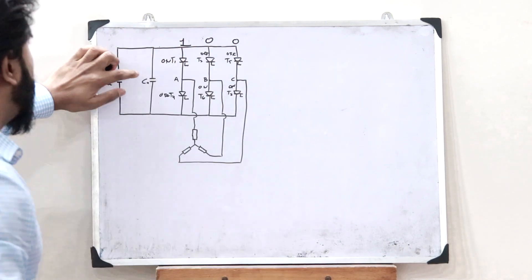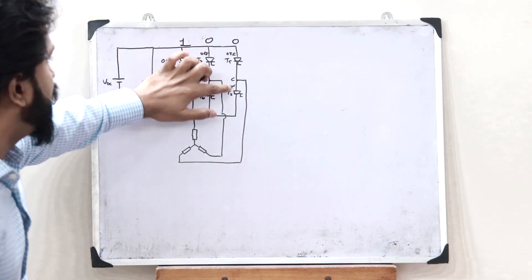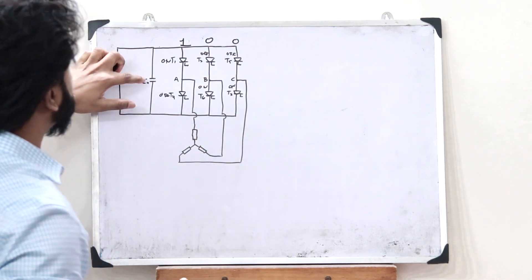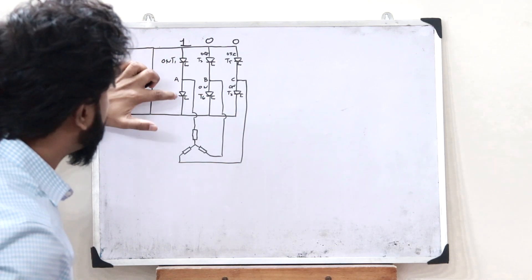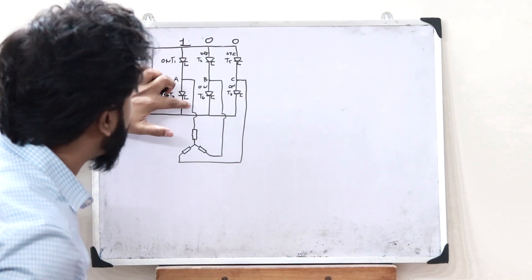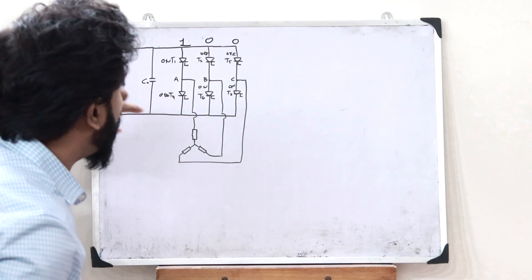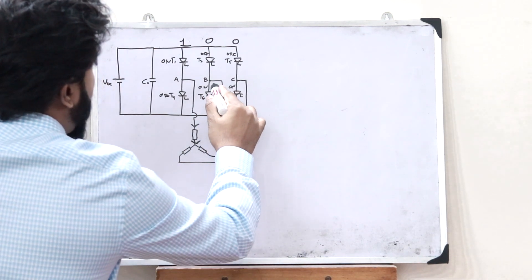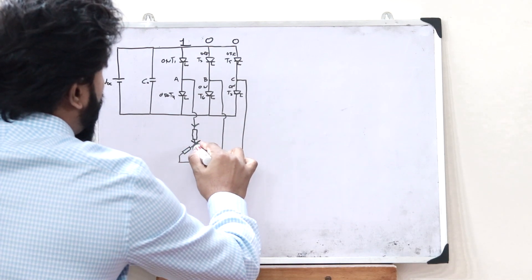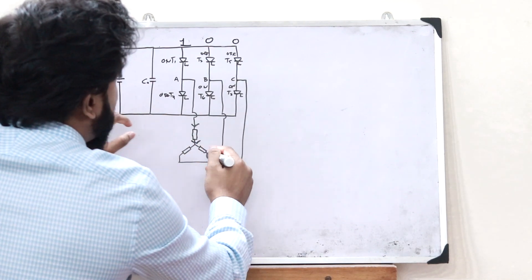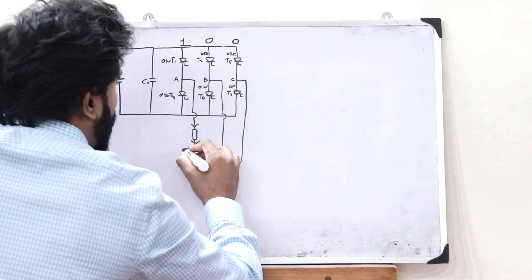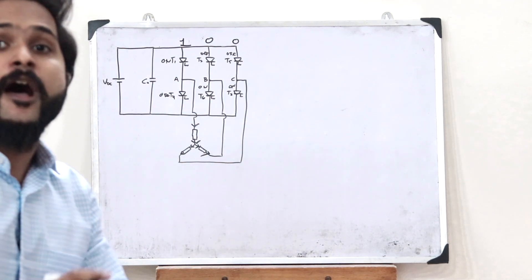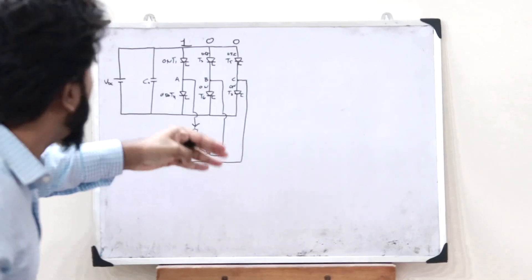So we get something like this: T1 is ON and the remaining switches are OFF. As this capacitor starts discharging a DC voltage, this DC voltage goes through T1, and since the other switch is OFF it won't go there. It will go through this particular line and reach the load. Now switches T6 and T2 are ON, so this particular voltage gets divided and completes the circuit, giving us a voltage divider circuit.